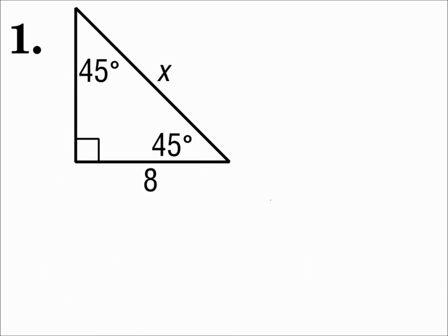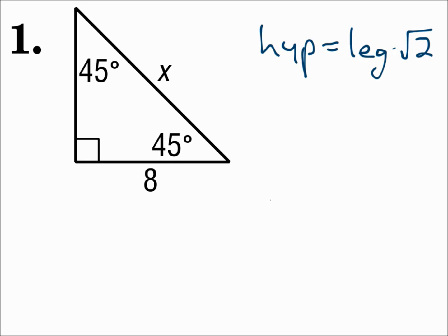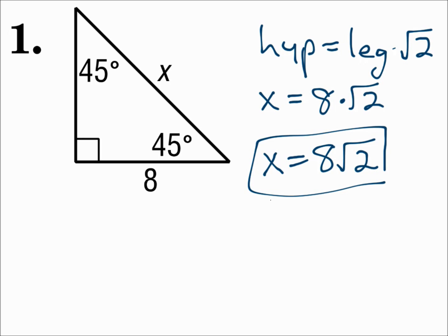Find x. Here we have a 45-45-90 triangle. We know the leg, which is 8, and we're looking for the hypotenuse, which is x. Since we're looking for the hypotenuse, we will use the formula that starts with hypotenuse equals. Hypotenuse equals leg times the square root of 2. Substituting your values: the hypotenuse is x and the leg is 8, so x equals 8 times the square root of 2. Don't punch that into your calculator, because you want the exact value, which is 8 times the square root of 2.